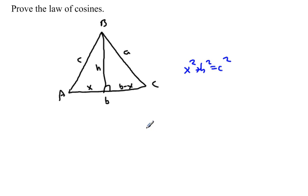I can also, using this triangle on the left-hand side, say that the cosine of angle A is equal to x over c, because cosine is adjacent over hypotenuse. And if I solve that for x,